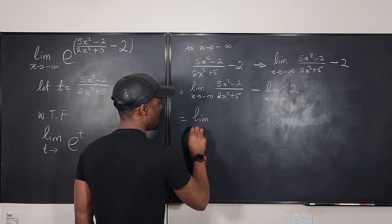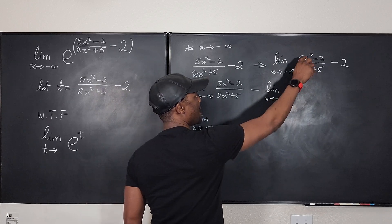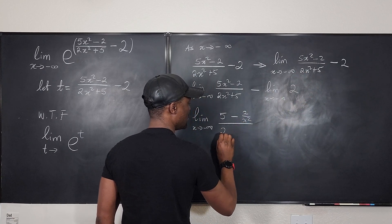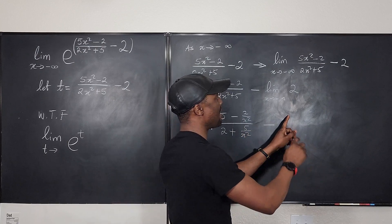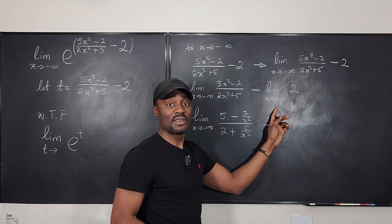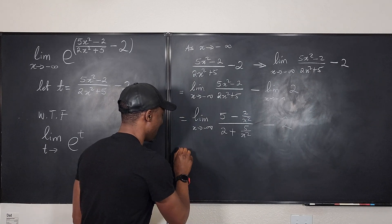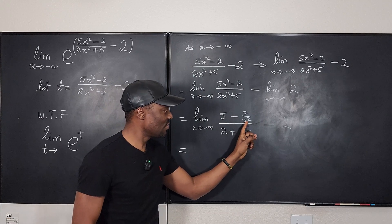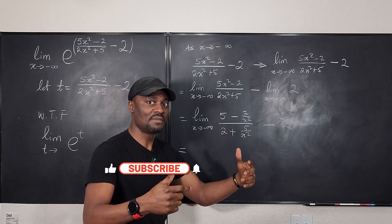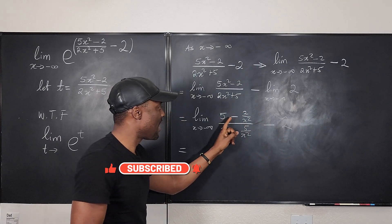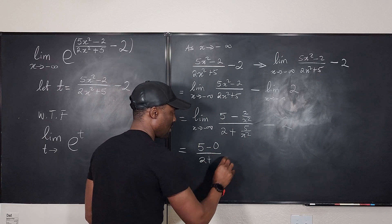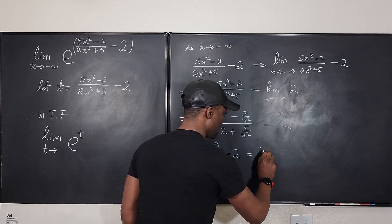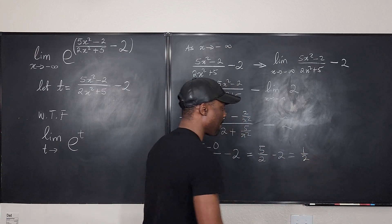The limit as x goes to negative infinity: dividing 5x² by x² gives 5; dividing 2 by x² gives 2/x²; dividing 2x² by x² gives 2; and 5 divided by x² gives 5/x². The limit of a constant stays constant. Applying limit laws to each term: 5 stays as 5, and 2/x² goes to 0 because negative infinity squared is infinity and 2 divided by infinity is 0. So you get (5 minus 0) over (2 plus 0) minus 2, which gives 5/2 minus 2, that's 1/2.